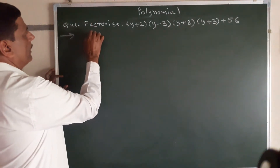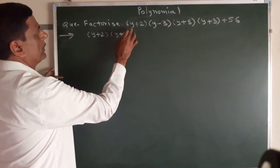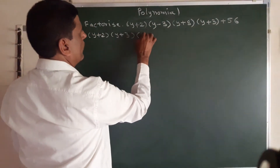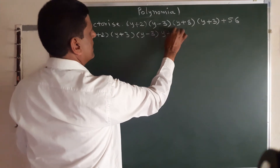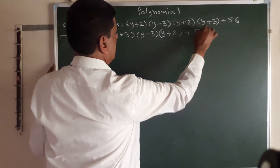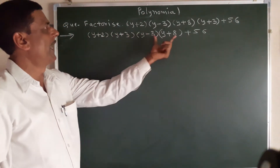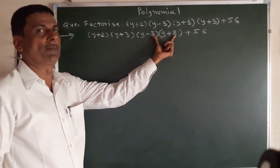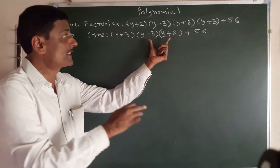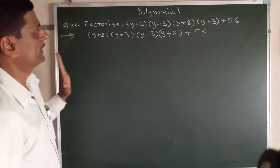We take (y+2) and (y+3) together, and (y-3) and (y+8) together, plus 56. Both pairs give y squared plus 5y as the common expression — the addition in both cases is 5. So the second term y squared plus 5y appears in both.